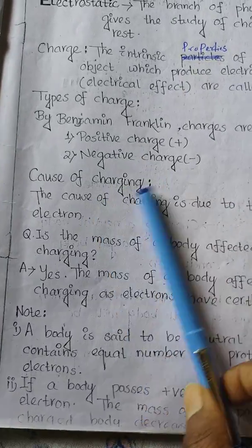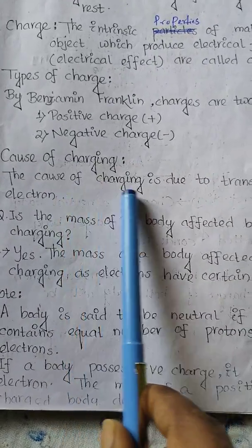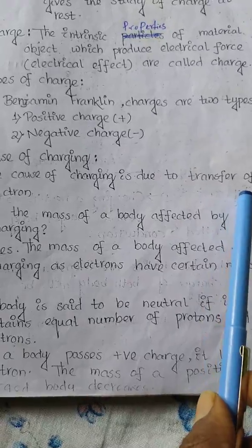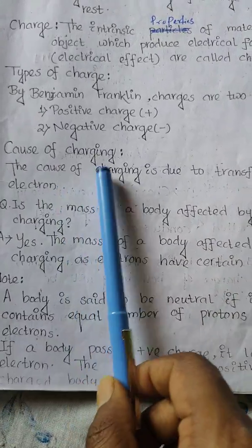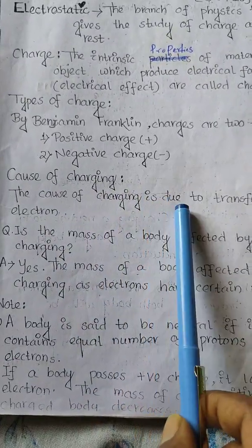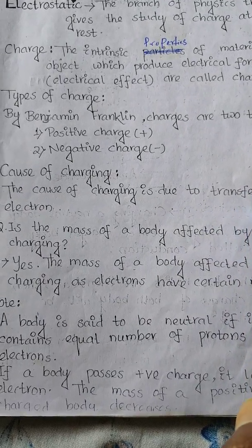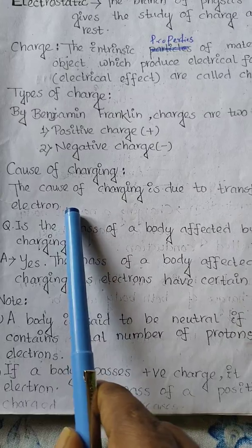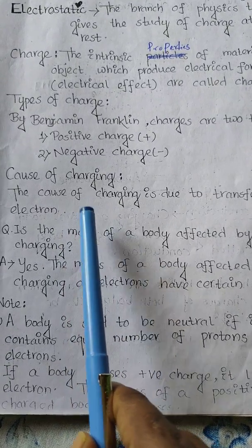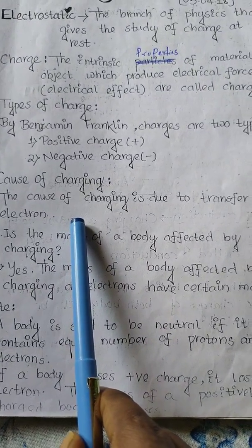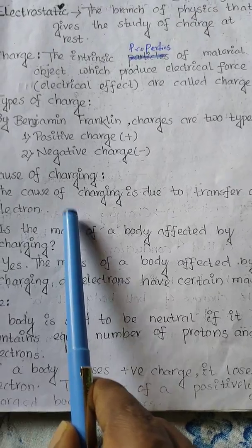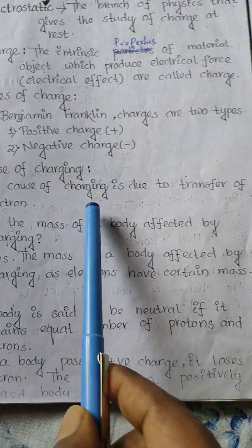The cause of charging is due to the transfer of electrons. A body can be charged by gaining or losing electrons. When talking about charging a body, the question arises: why electrons? Because protons are bounded inside the nucleus by strong nuclear force.